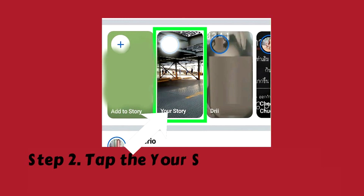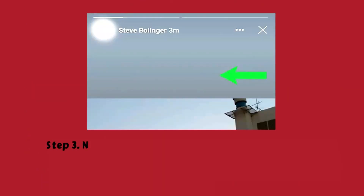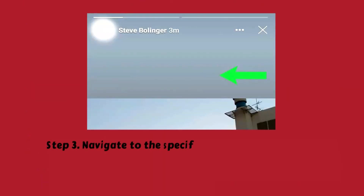Step 2: Tap the Your Story tile. You'll see your story pop up in a new window. Step 3: Navigate to the specific post or video you want to delete.